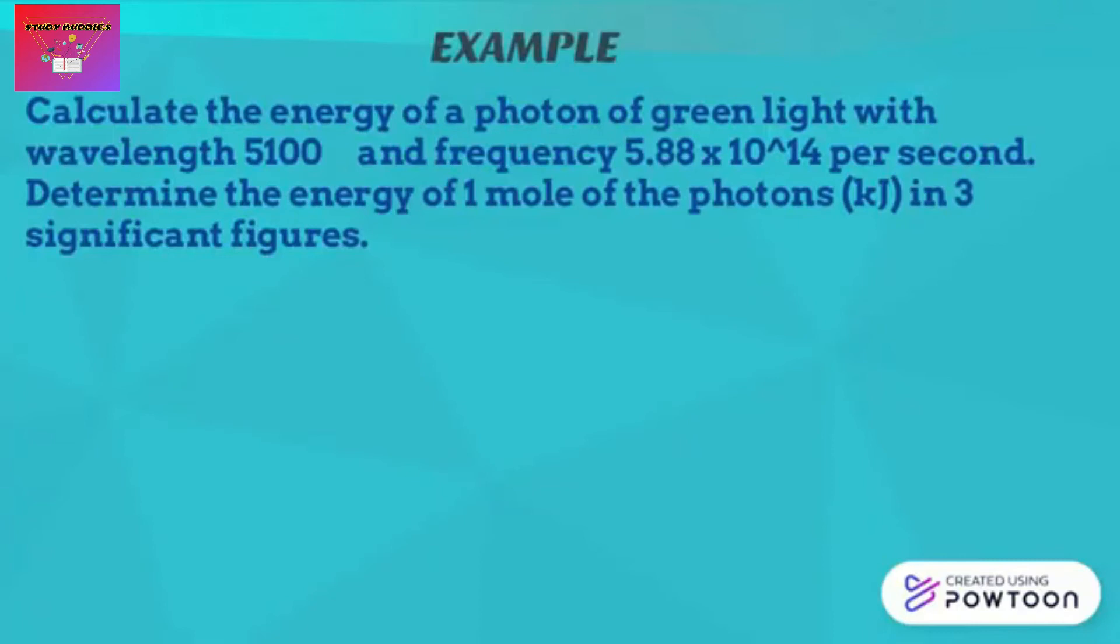Now let's do a sample question that applies the formula we have learned. In this question we are required to calculate the energy of a photon of green light with wavelength of 5100 Angstrom and frequency of 5.88 multiply with 10 to the power of 14 per second. Determine the energy of one mole of the photons in kilojoule in three significant figures.